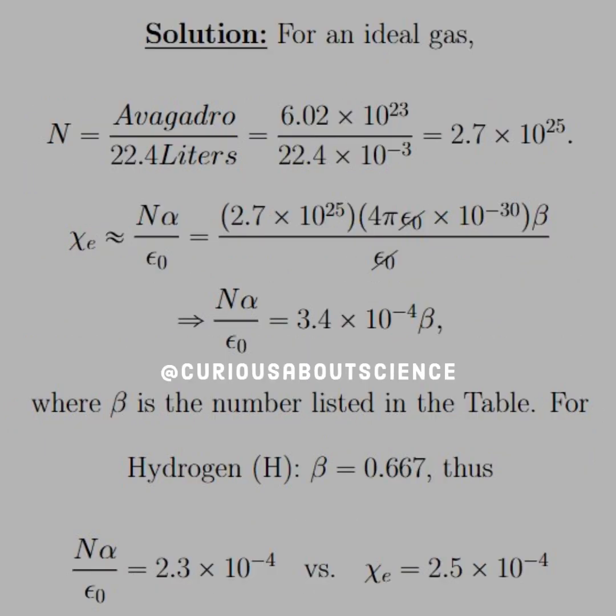Alright, enough about the background. For an ideal gas, which the gases are listed in the table, the density is Avogadro's number divided by 22.4 liters. Converting to the right units, we multiply by 10 to the negative 3, and we end up with N equals 2.7 times 10 to the 25th.